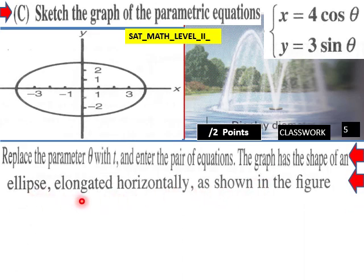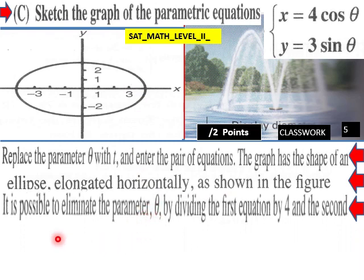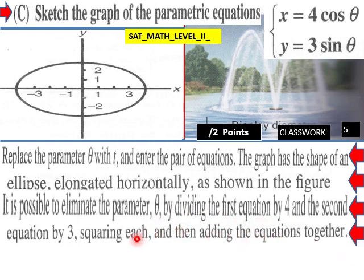The graph has the shape of an ellipse elongated horizontally. Here's our major axis of our ellipse as shown in the figure. It is possible to eliminate the parameter θ by dividing the first equation by 4 and the second equation by 3.